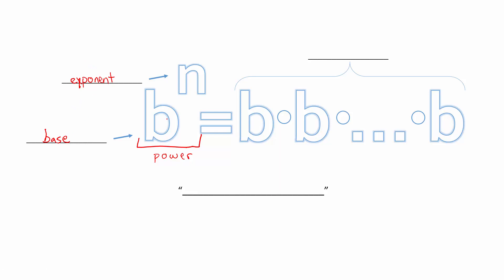At this stage of our math career, only the base should be a letter, not the exponent, but later on we could end up with an exponent being a letter as well. This is showing us in general what happens: b to the n means repeated multiplication — we are being asked to multiply b together n times.